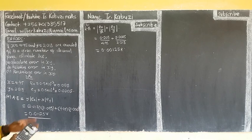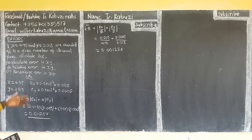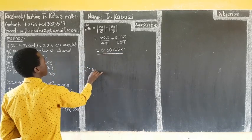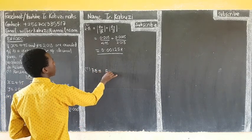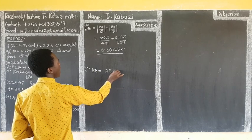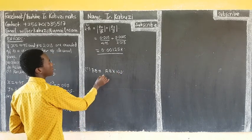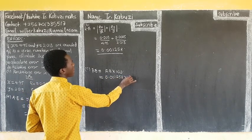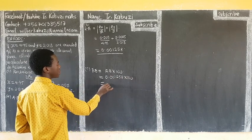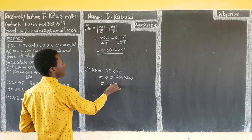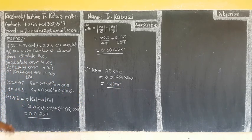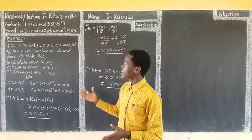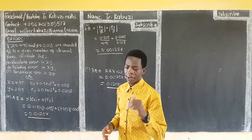So now, after that, let's get the percentage error. How do you get the percentage error? We said our percentage error is given by the relative error times 100. So here, what I'm going to do — I'm going to take 0.01258 then times 100, which will give 0.1258. And that will be our answer. So that's how we use the formula we have seen in the propagation of errors and the product.